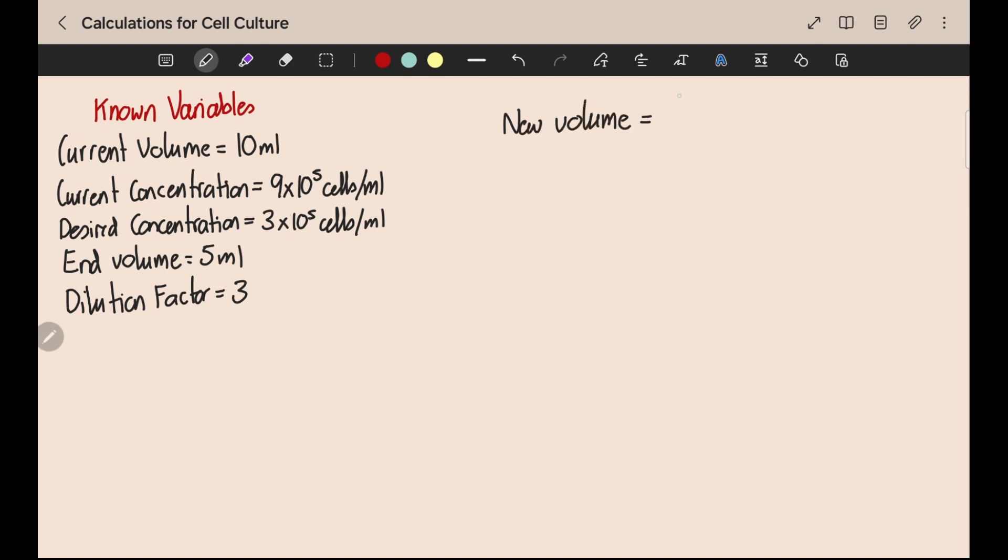Again from the equation shown in part 1, this would mean that your new volume is equal to the old volume times by dilution factor. So in this case you would have the new volume equal to 10 mils times 3, which is the dilution factor, which of course equals 30 mils. You already have 10 mils so it would mean adding another 20 mils of fresh media on top.